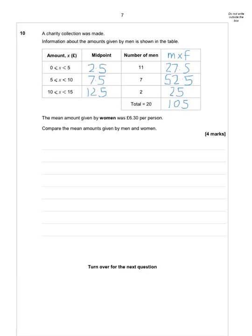So the mean is when we add up all the money, that's 105, and we divide that by how many men there are. And there are 20 men. Some people divide by the number of groups here. Please be careful not to do that. It's divided by the total frequency.